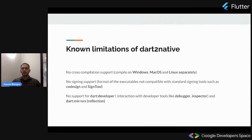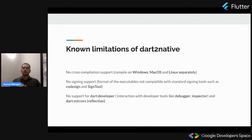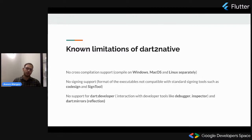What are the limitations of dart2native? First, there is no cross-compilation support — you need to compile separately for Windows, macOS, or Linux. Second, there is no signing support for CLI executables generated using dart2native; they are not compatible with standard signing tools like codesign or signtool. Third, there is no dart:developer support, meaning we cannot debug our CLI application using a debugger or inspector. And currently there is also no support for dart:mirrors in dart2native, which is primarily used for reflection.